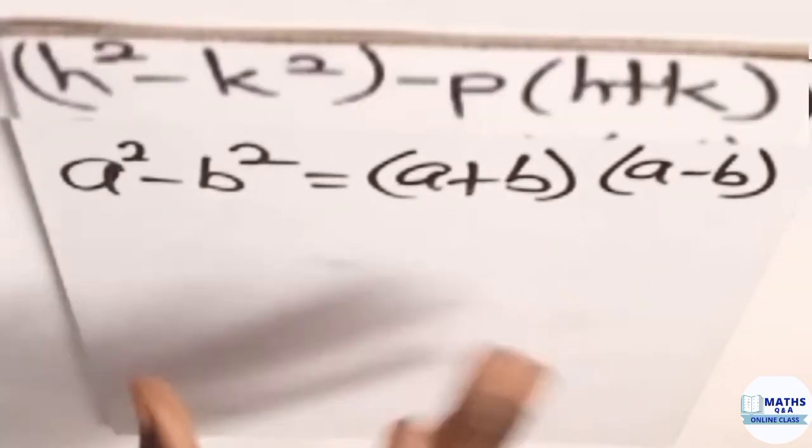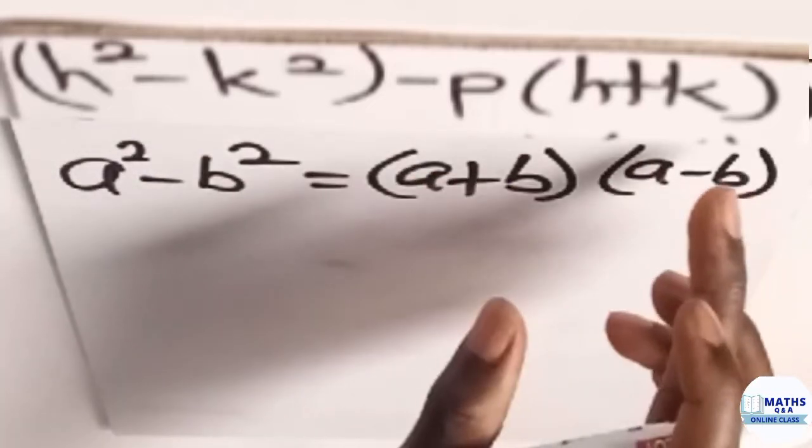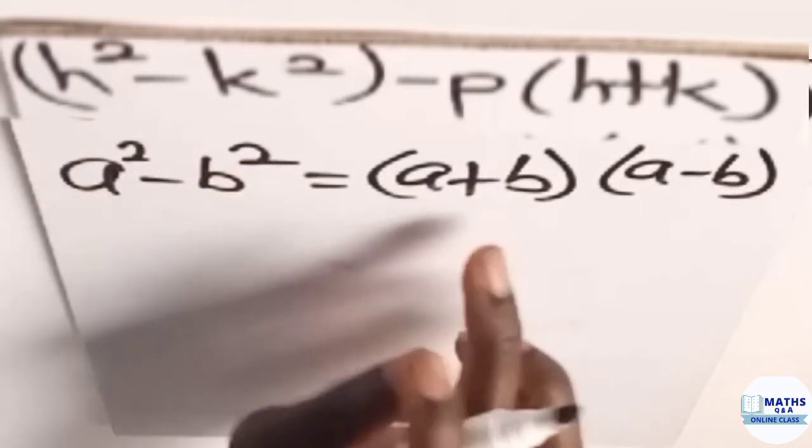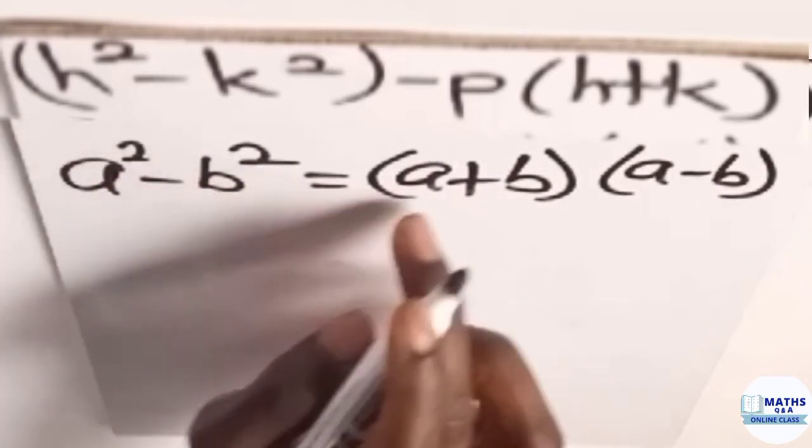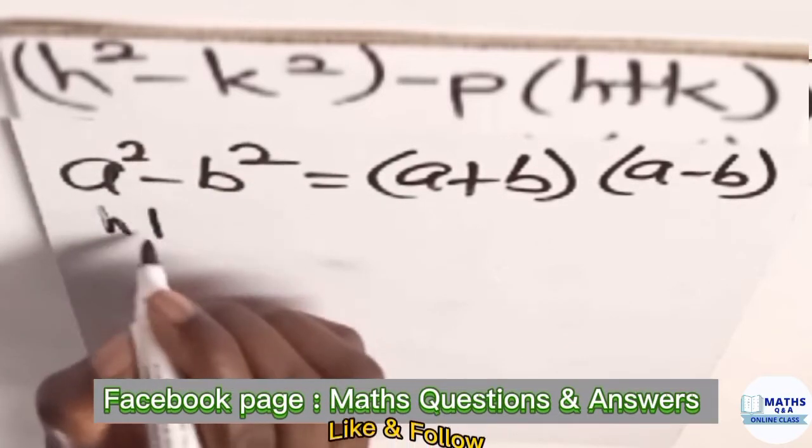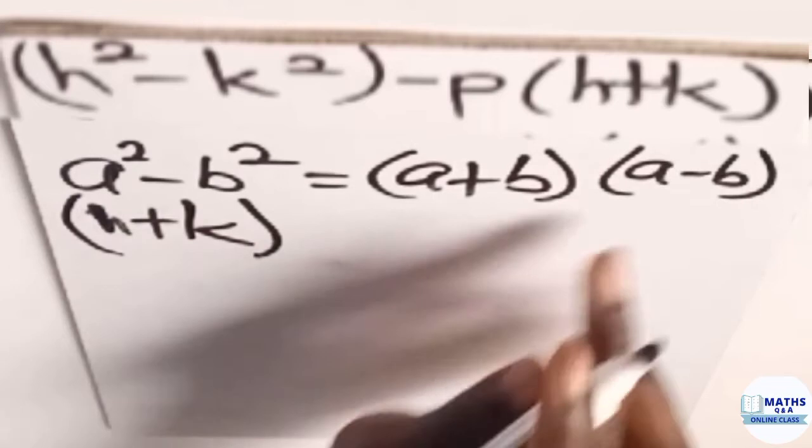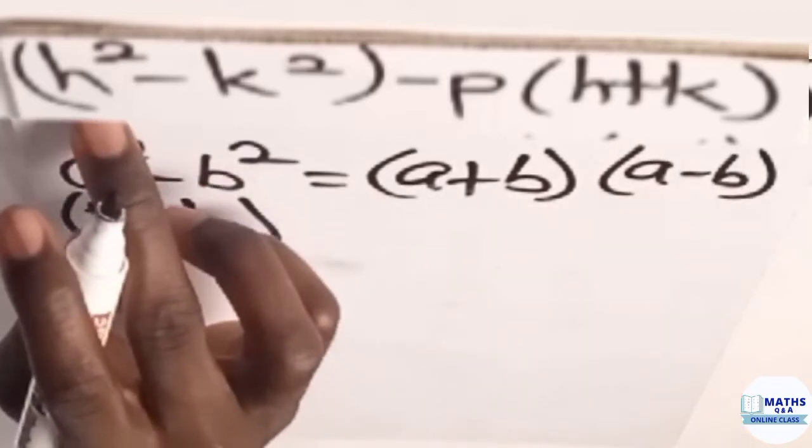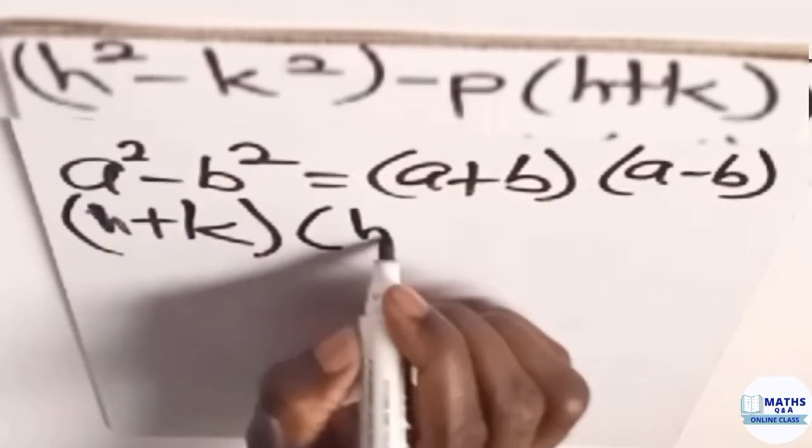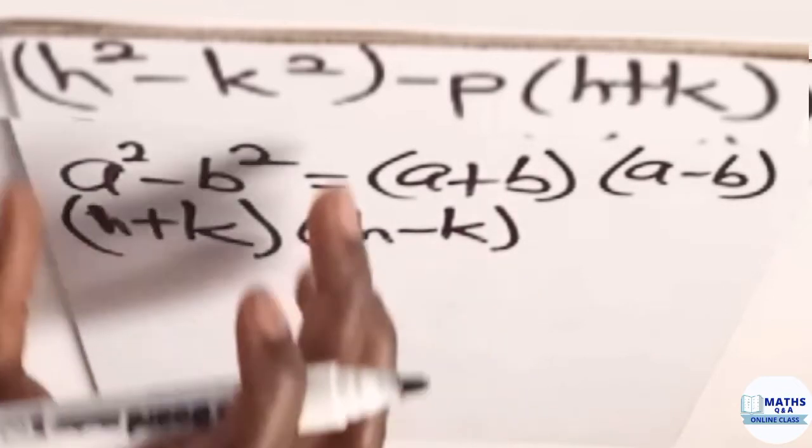So now let's write that. We are still having h square minus k square minus p in a bracket h plus k. And then we are factorizing that. So this, we replace it with that, which is, instead of a, write h. So we have h plus k in a bracket, and then we have the next one, h minus k in another bracket. So this is the factorized form of this.